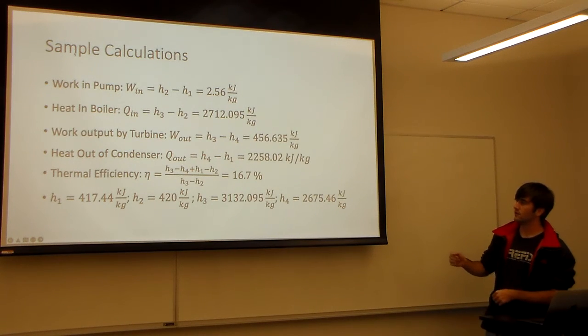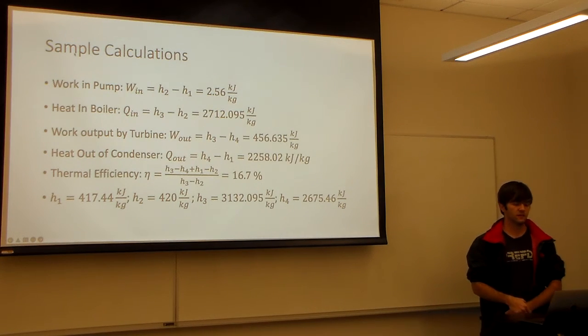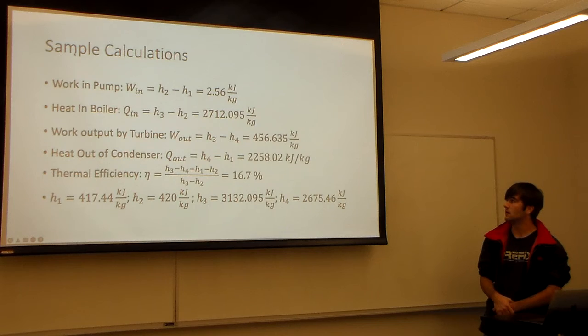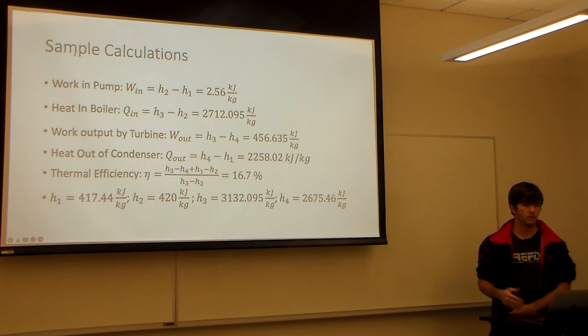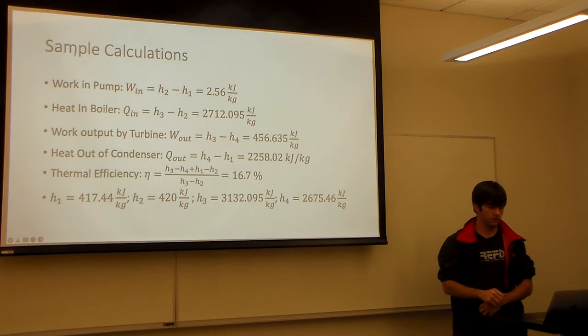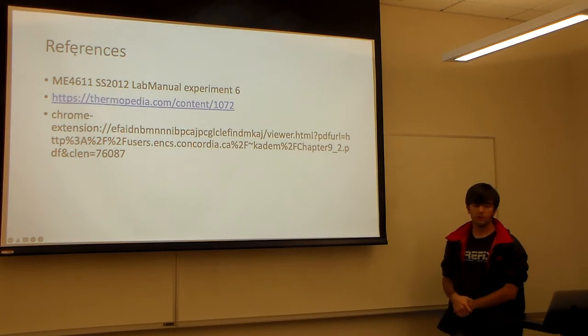I clearly did something a little bit wrong because the thermal efficiency for most turbines is around 80 percent, and that is 16. But it's just a general example of how to find the different facets of the pump. And those are my references.